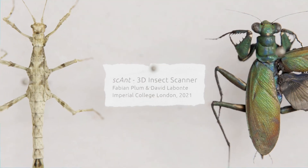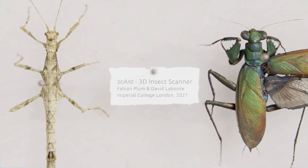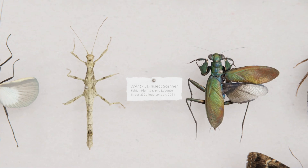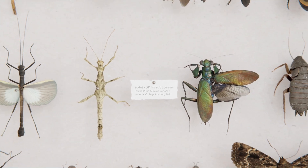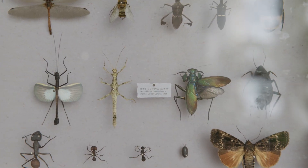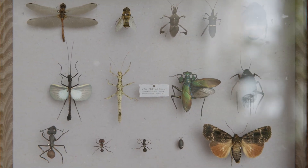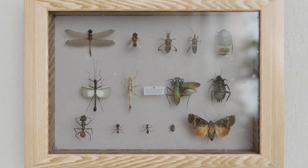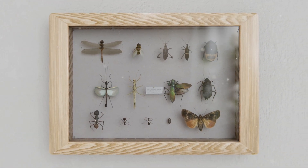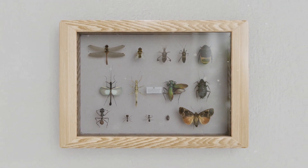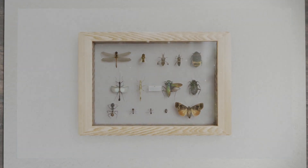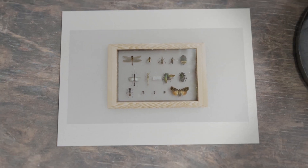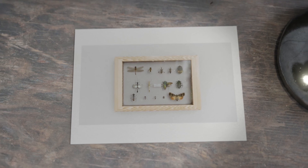Natural history collections house millions of insects of immeasurable value to the scientific community. However, they can typically only be accessed on-site, as they are too fragile to transport and only a handful of researchers are ever able to interact with them. Significant digitization efforts to make these specimens more widely available are underway, but most of these efforts produce two-dimensional photographs, capturing only a fraction of the relevant information.